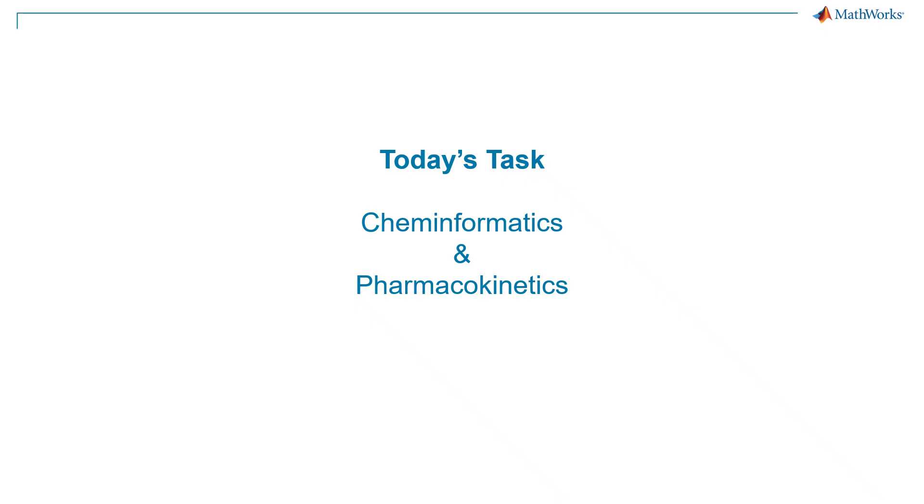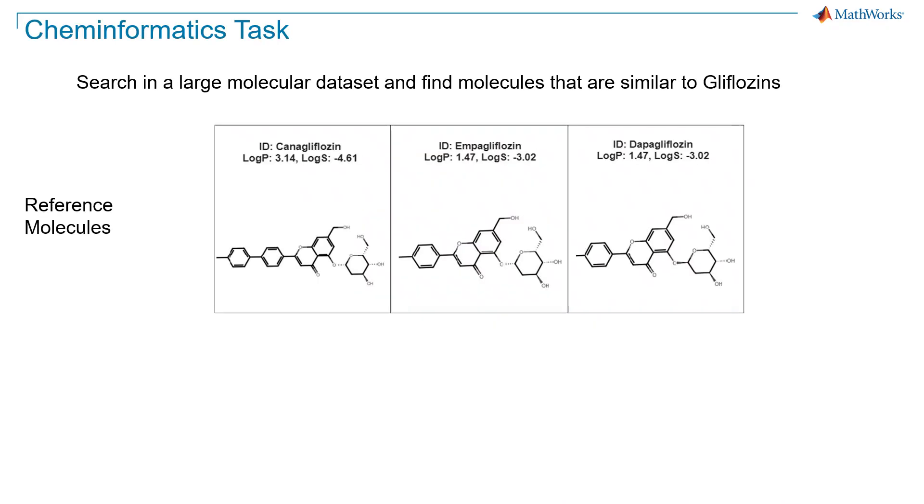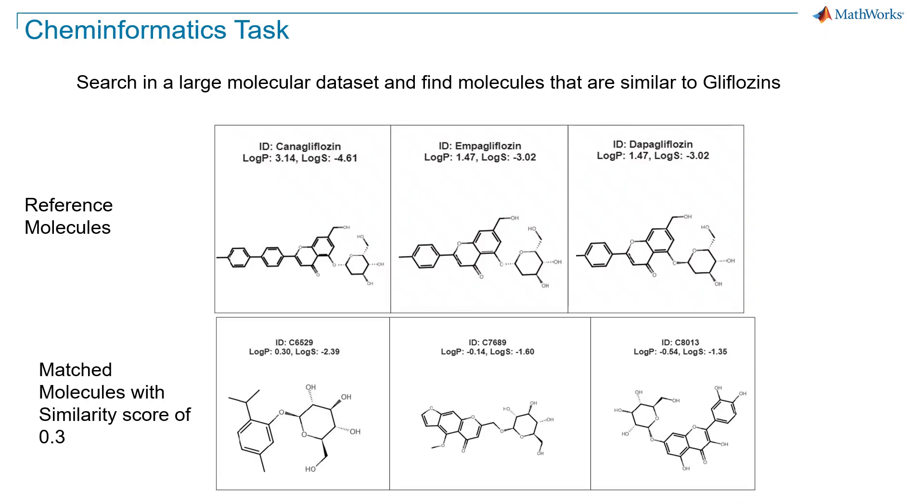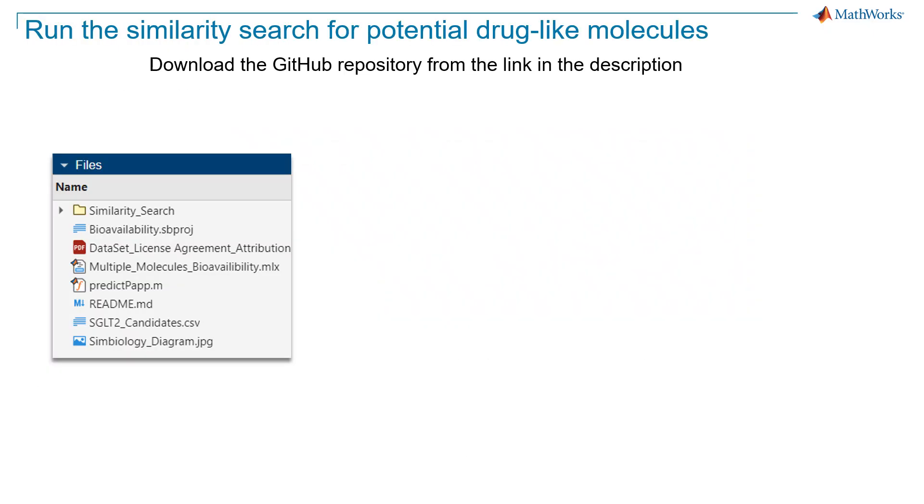This means we will search for drug-like molecules in our database and then simulate its absorption and distribution by the body over time. Let's start with cheminformatics. Based on these techniques that we learned, we begin by searching in a large molecular dataset and find molecules that are similar to some known gliflozins. We then extract those molecules and save them in a new database for further analysis. Please download the GitHub repo for this video using the link provided in the description.